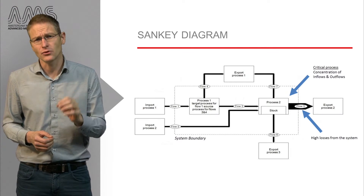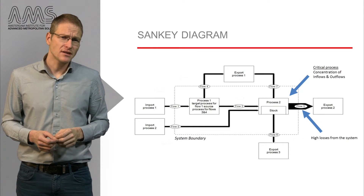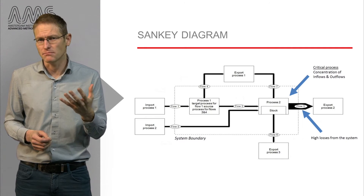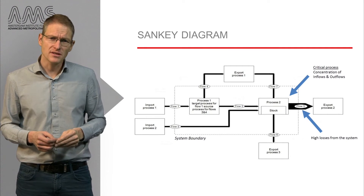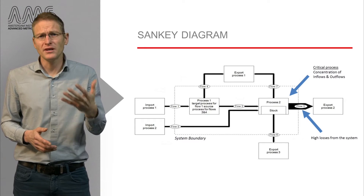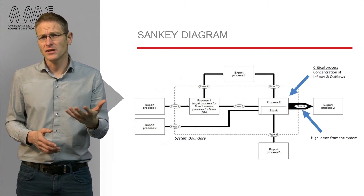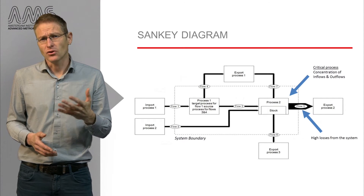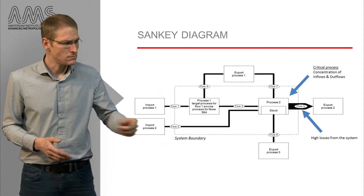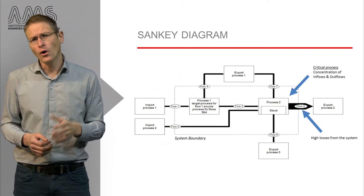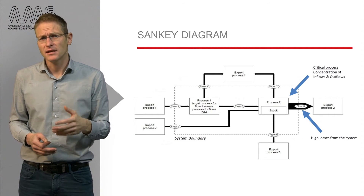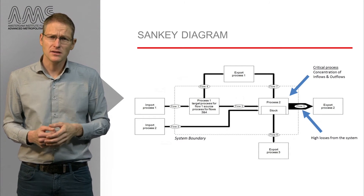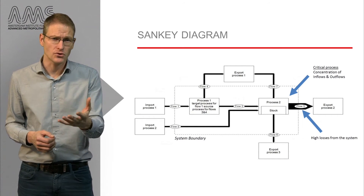More detailed versions of a Sankey diagram enable you to identify critical system properties, or in other words critical metabolism properties of your city. For instance, you can identify the processes that are of key importance to target innovation and change — these are the processes that link and concentrate many different flows. Or you can look at the processes that have a high output flow or system losses, which could be the processes that are crucial to address first.